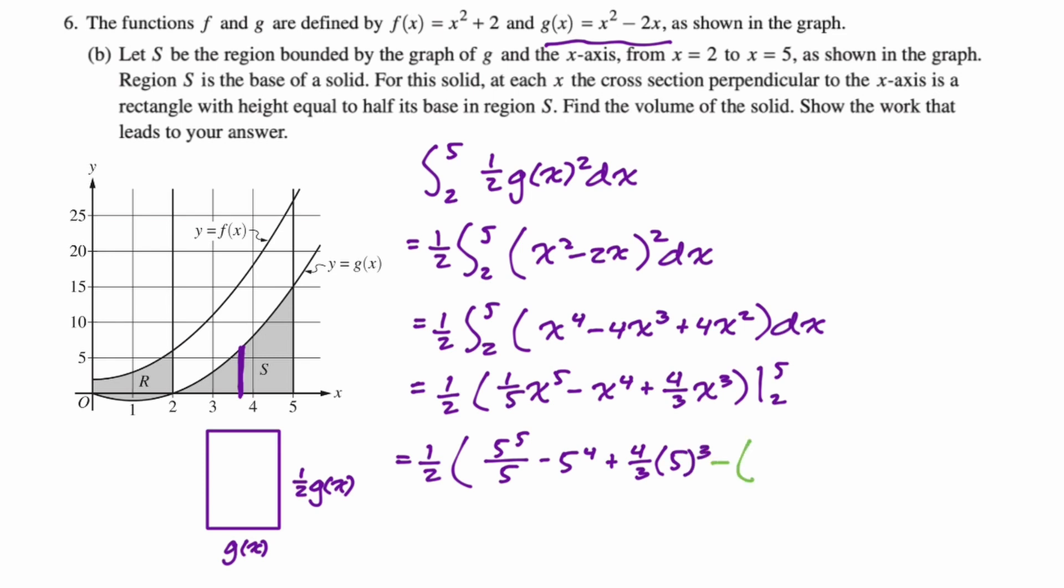That's what you get when you plug in five, minus parentheses what you get when you plug in two, which is going to be 2⁵/5 - 2⁴ + 4/3·2³. And then we're going to close our parentheses correctly.